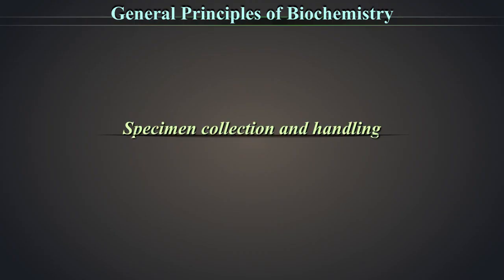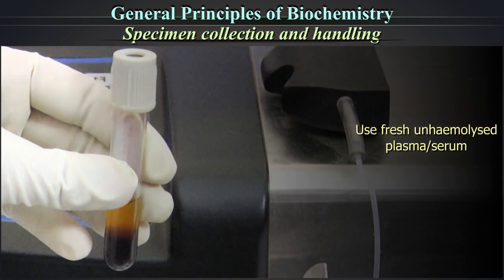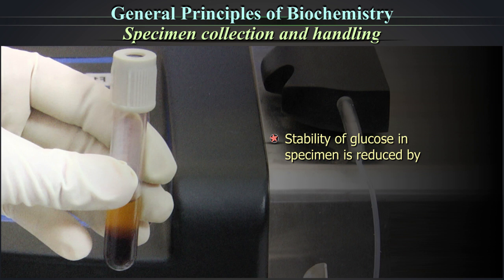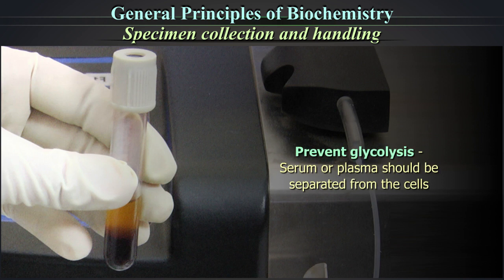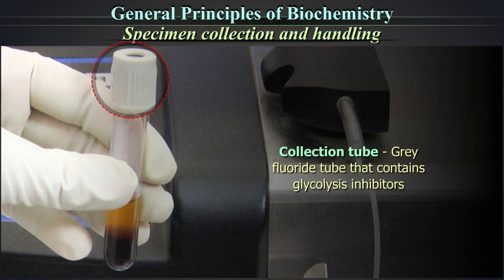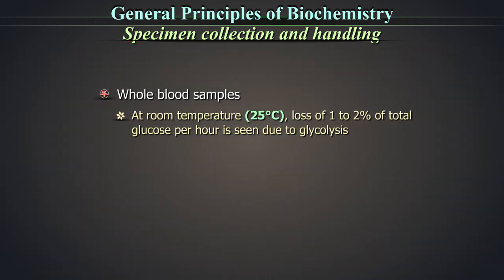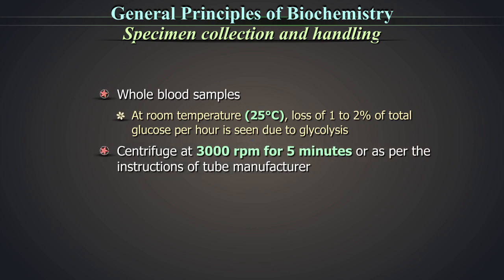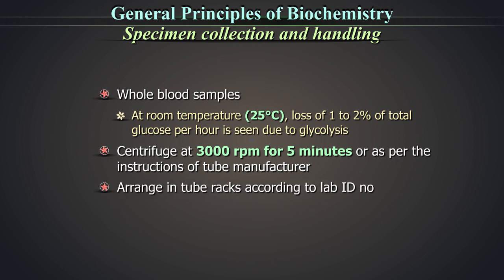Specimen collection and handling: use fresh unhemolyzed plasma. The stability of glucose in the specimen is reduced by bacterial contamination and by glycolysis. Serum or plasma should be separated from the cells as soon as possible to prevent glycolysis. The best collection tube is the grey fluoride tube that contains glycolysis inhibitors. At room temperature, i.e. 25 degrees Celsius, a loss of 1–2% of total glucose per hour is seen in whole blood samples. Centrifuge at 3000 RPM for 5 minutes. Arrange in tube racks according to lab ID numbers.